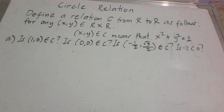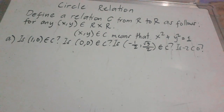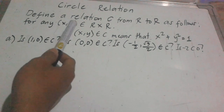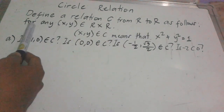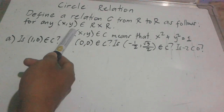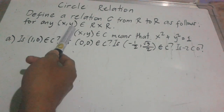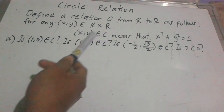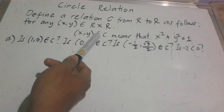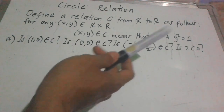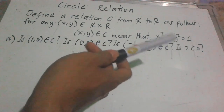Hello guys, I'm Mr. E143. For today's video, we're going to have the circle relation. We define a relation C from R to R as follows: for any (x, y) element of R cross R, (x, y) is element of C means that x squared plus y squared is equal to 1.